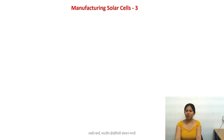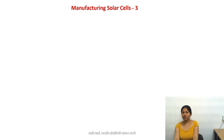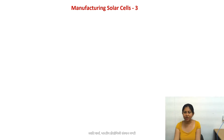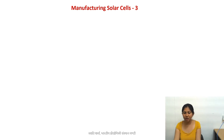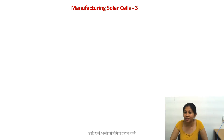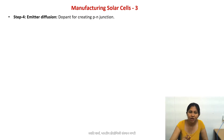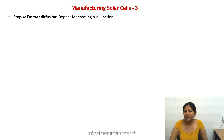Hello, this is our third lecture on manufacturing of silicon-based solar cells. The steps we are going to discuss here are the steps after surface texturing and acidic cleaning. This is the fourth step, which is known as emitter diffusion.